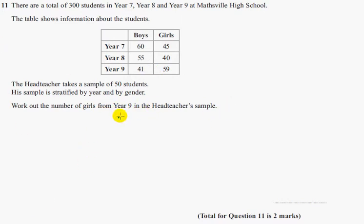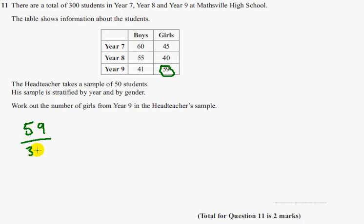First of all, in the headteacher's sample, girls from Year 9 — there are 59 of those out of the 300 students in the whole school across Year 7, 8 and 9. So the proportion is 59 over 300.